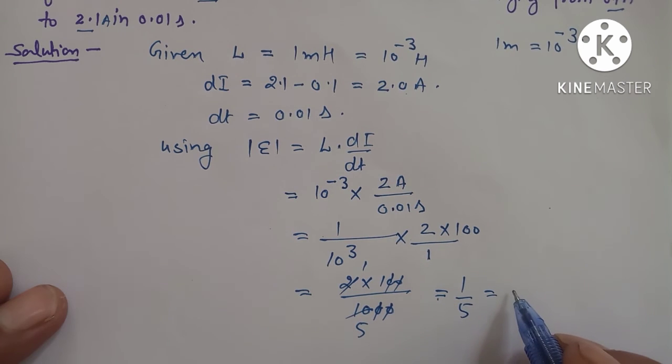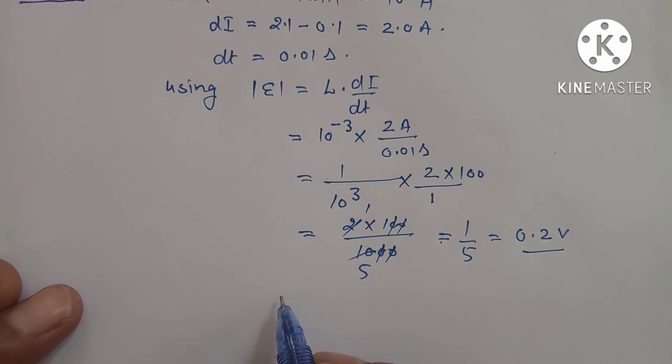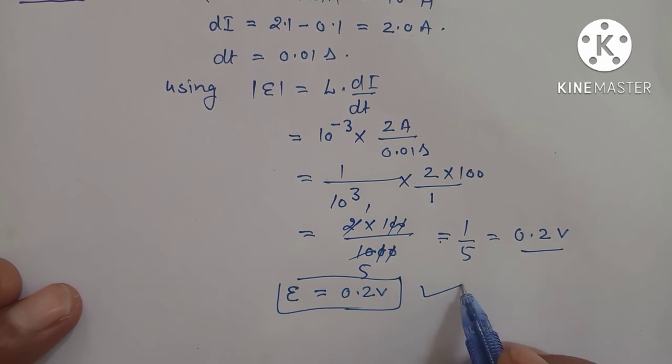When we divide 1 by 5 we get 0.2 volt. So in this way we find the solution and our answer, that is EMF equals 0.2 volt, which is our answer.